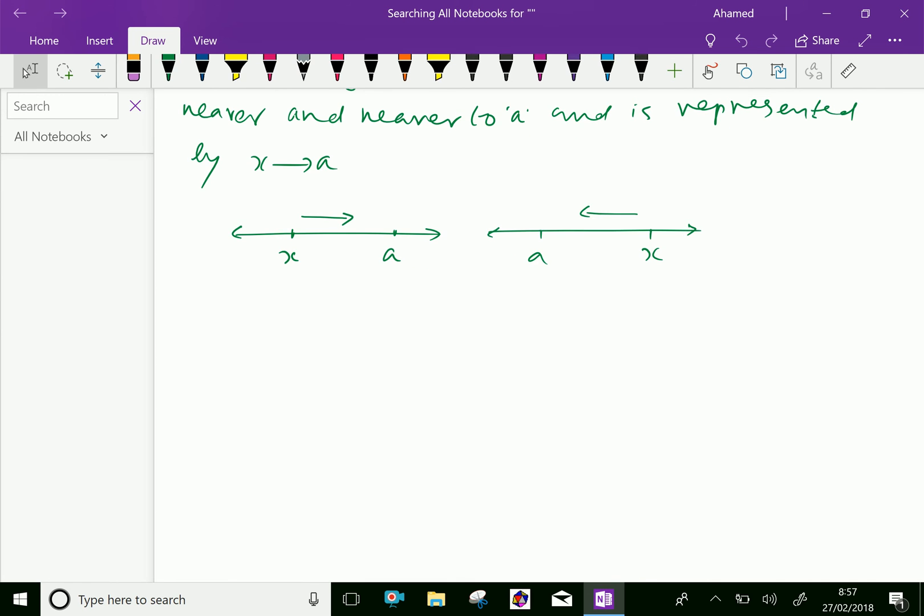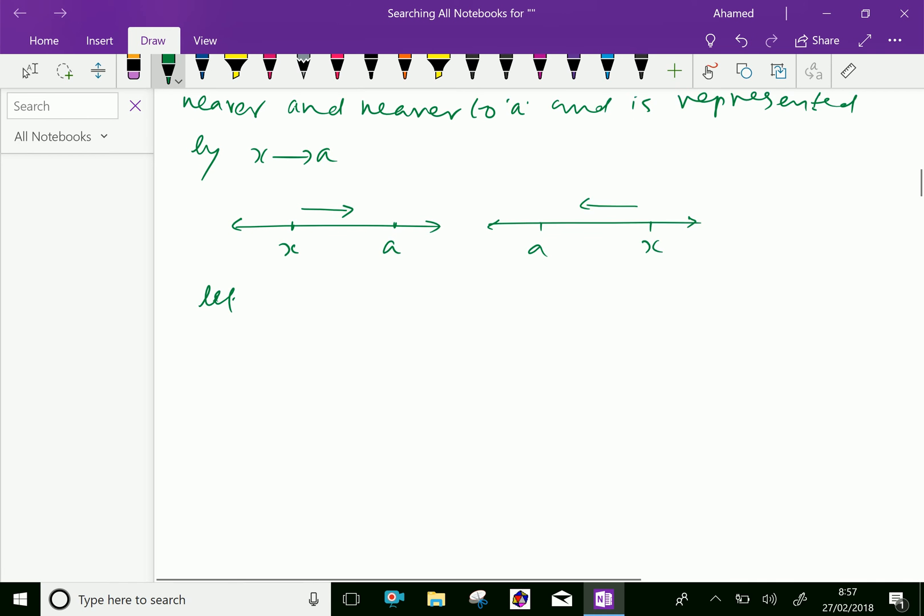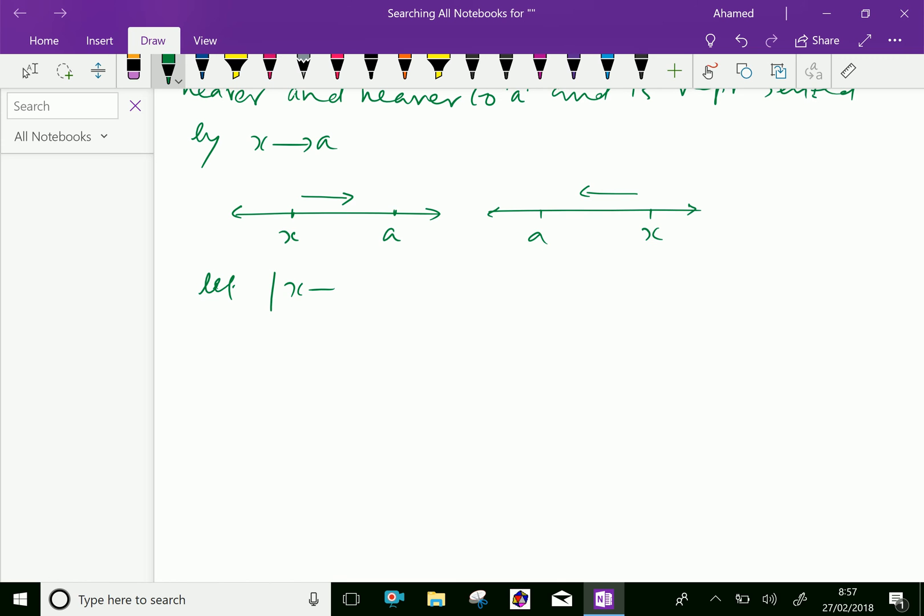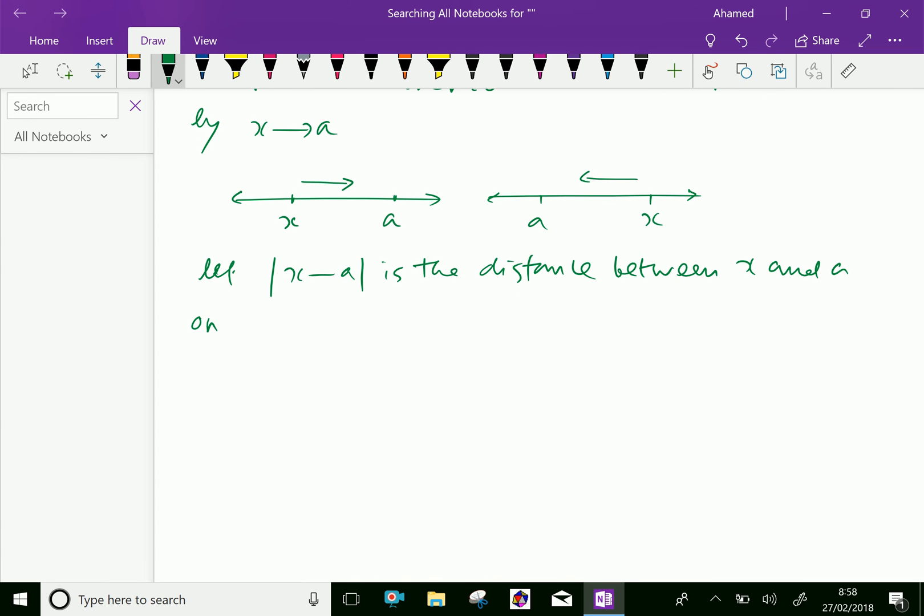Let the modulus of x minus a be the distance between x and a, point x and a on the real number line, and this is represented by delta. Delta is the difference of x and a, which is modulus of x minus a.